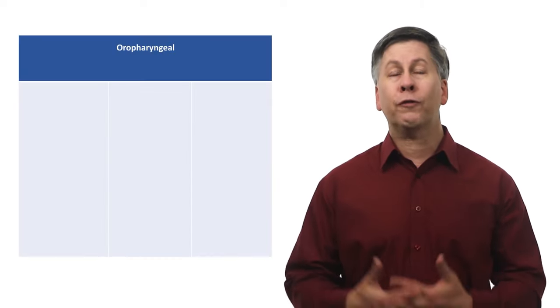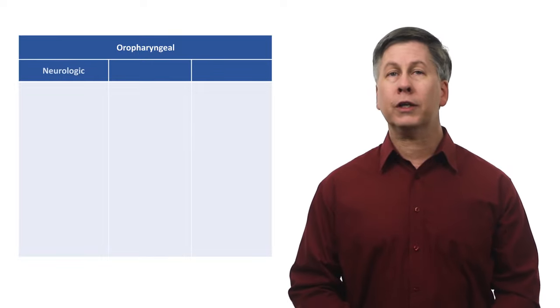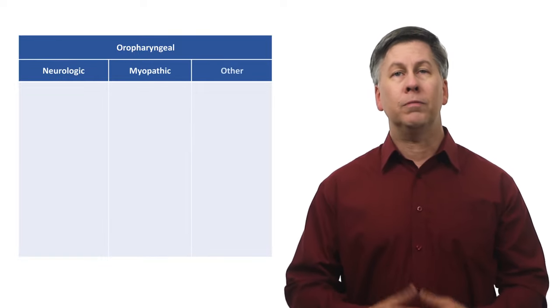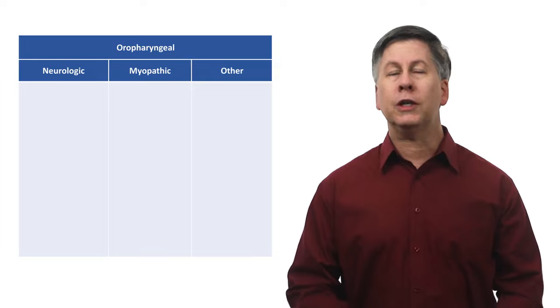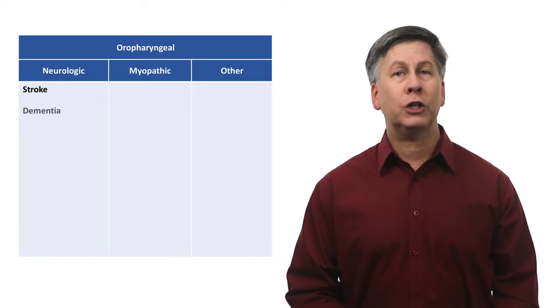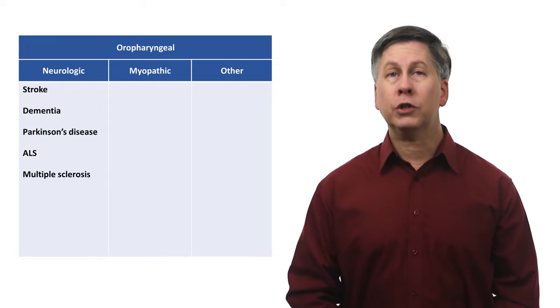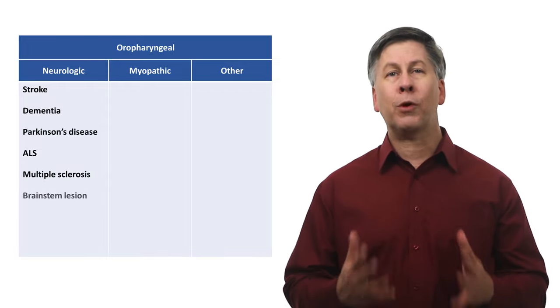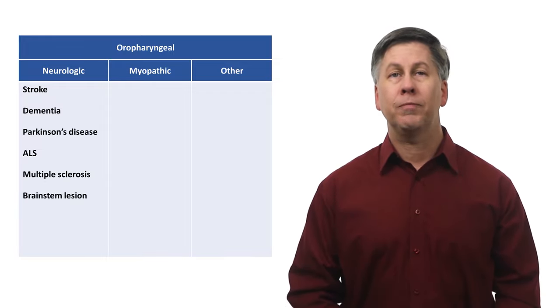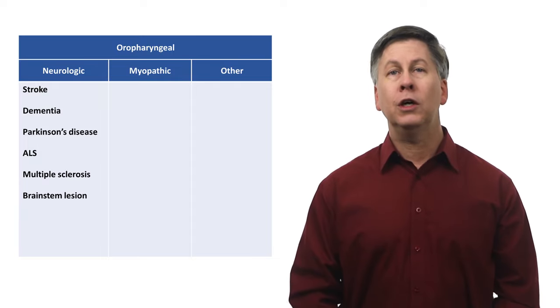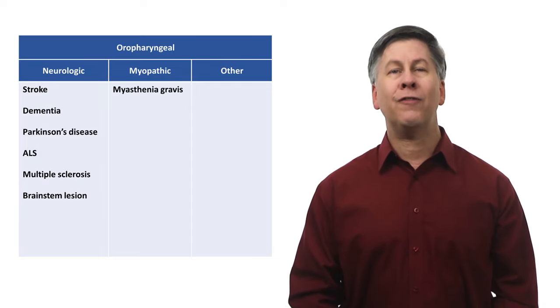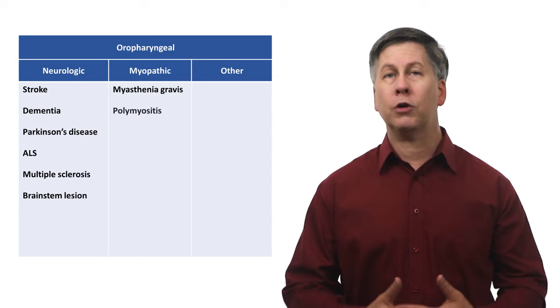Etiologies of oropharyngeal dysphagia can be subdivided into neurologic, myopathic, and other. Neurologic etiologies include stroke, any form of dementia, Parkinson's disease, ALS, multiple sclerosis, or any lesion in the brainstem such as a malignancy. Myopathic etiologies include myasthenia gravis and inflammatory myopathies such as polymyositis.